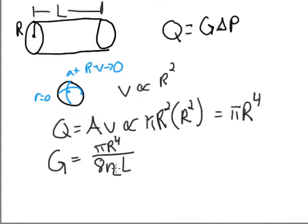However, if you have something like honey or molasses that is very viscous, so it doesn't really want to move, this is going to be a big number and then the conductance will go down.